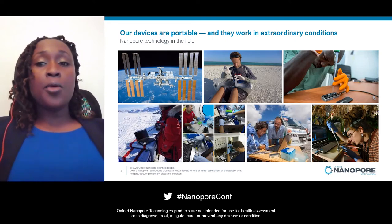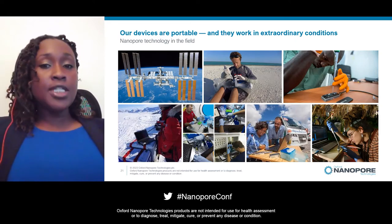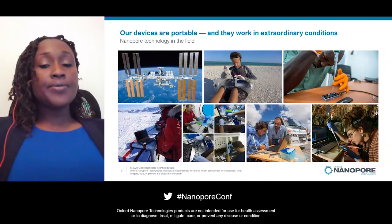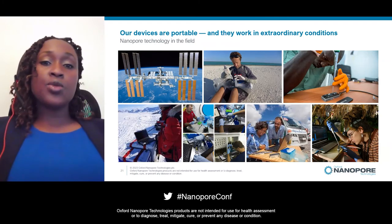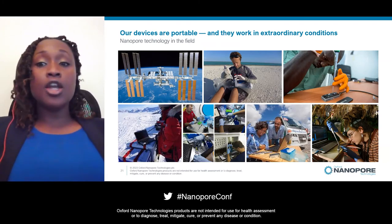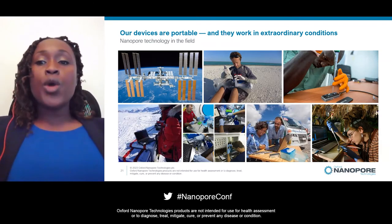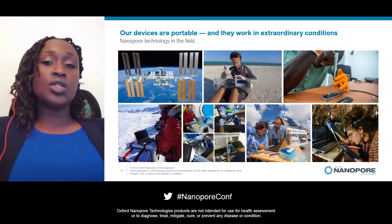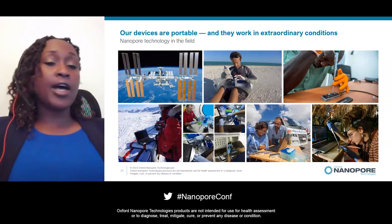Here you can see our MinION device being used everywhere, from deep oceans to rainforests and even space. Researchers are using Oxford Nanopore sequencing in low-resource settings with limited access to lab equipment, as our devices can be set up quickly whenever and wherever they're needed. This has been critical in outbreak surveillance, where our devices have been used in real-world responses to outbreaks of Ebola, Zika, and most recently COVID, enabling public health organizations to continuously surveil other viruses in efforts to launch more expedient solutions.